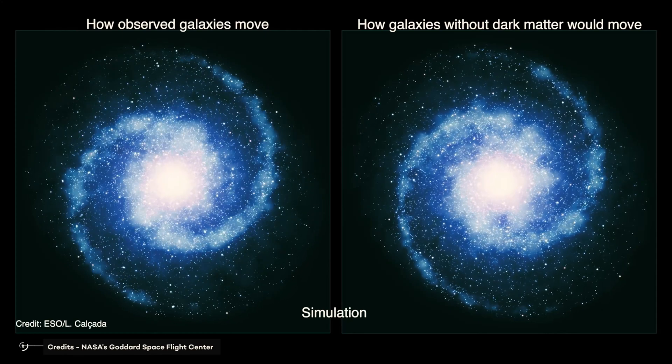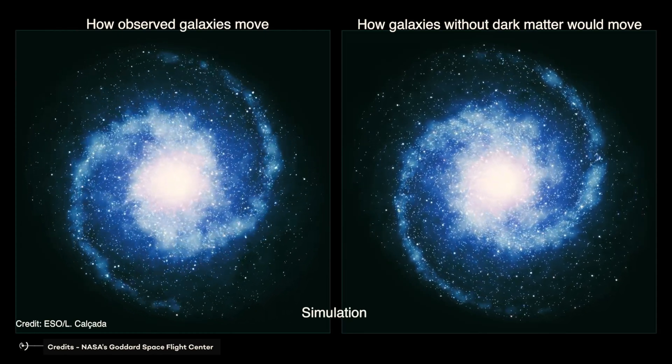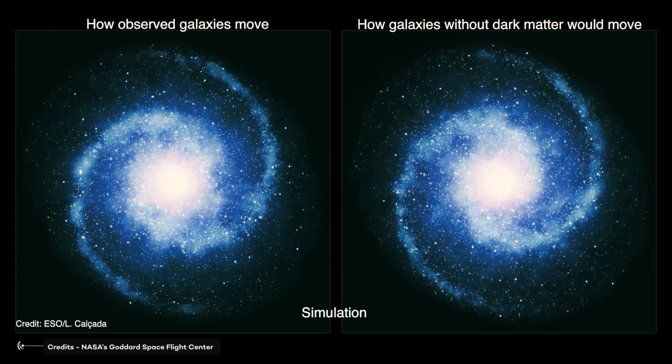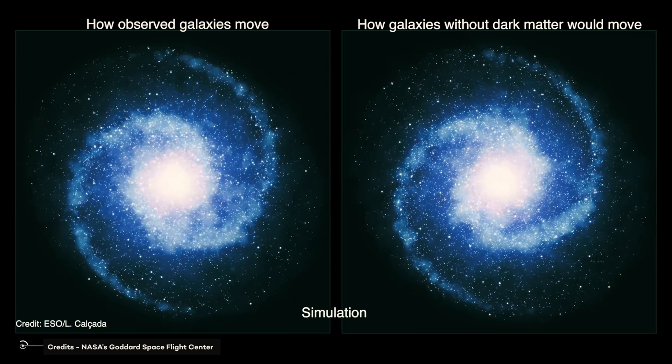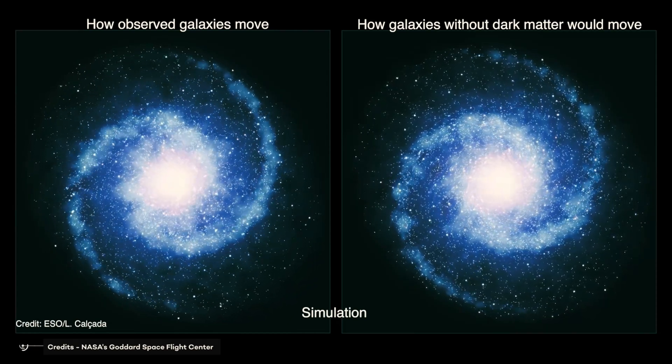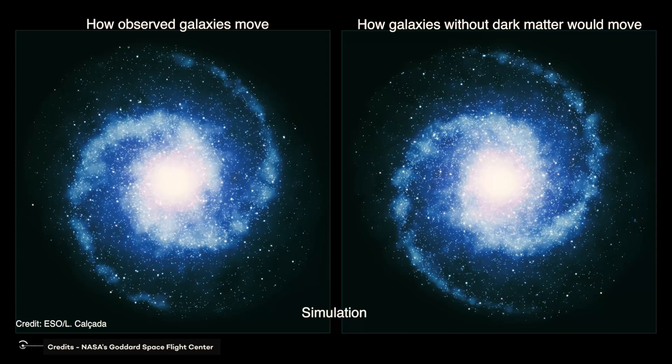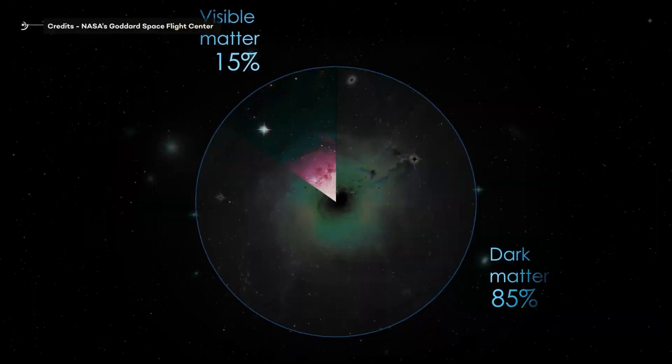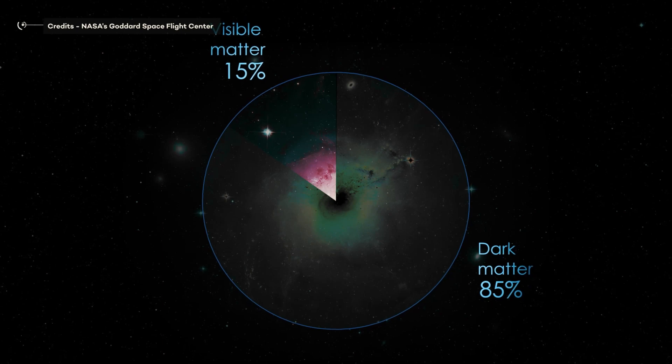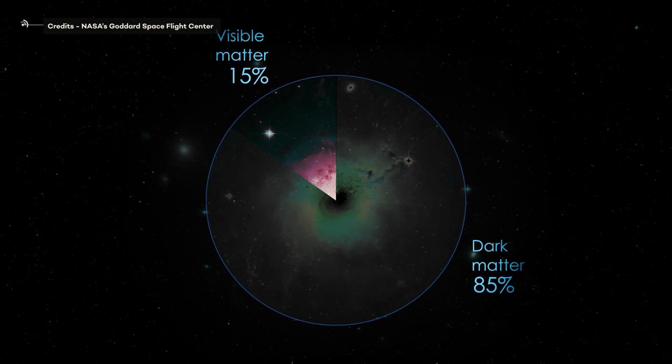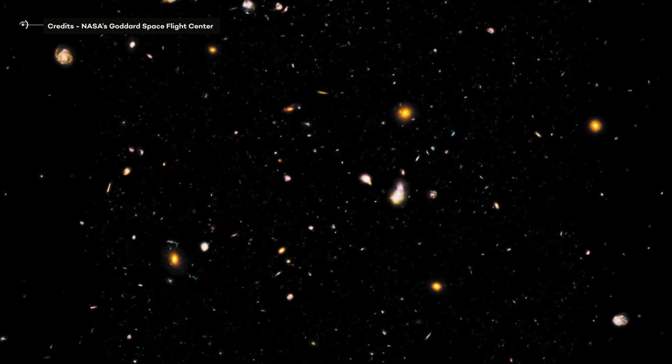Dark matter, on the other hand, simply passes through everything: itself, normal matter, photons, and so on. Dark matter particles have no way to lose the large momentum they start off with and only interact gravitationally. Each dark matter particle may have passed through the galactic center only a dozen times until the present day in the entire history of our universe.